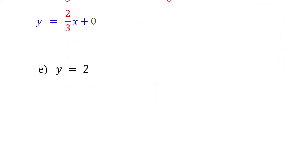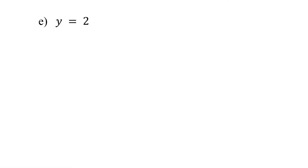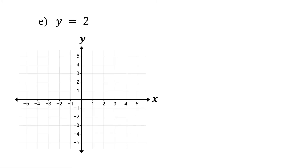Now let's take a look at a new kind of equation. This equation has no x term at all. What does that mean for the slope? y = 2 means the value of y is always 2, no matter the value of x. If you graph it, you will see that it is a horizontal line crossing the y-axis at 2.